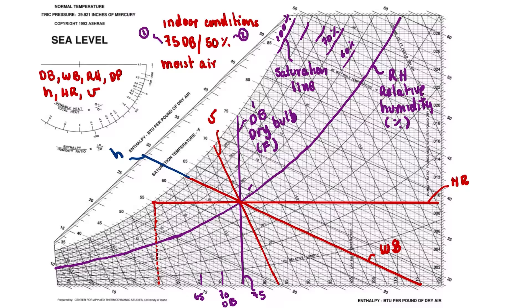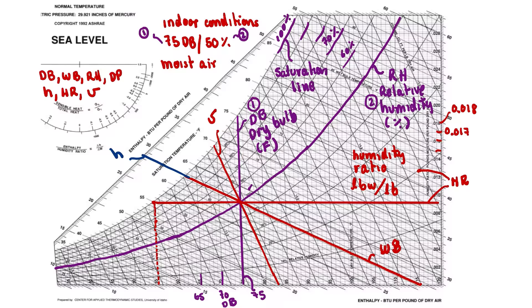Since we have our two thermodynamic properties, we can obtain all the remaining properties. We'll start with HR, which is humidity ratio. The units are pounds of water (moisture) divided by pounds of dry air. The humidity ratio is read from the lines going to the right side of the chart — for example, 0.017 or 0.018 pounds of moisture per pound of dry air.